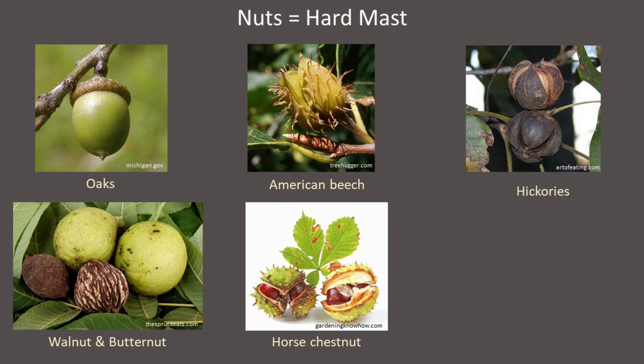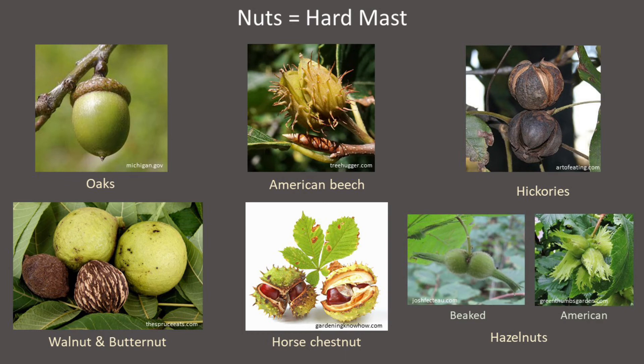These trees have often been planted and are frequently encountered around old homesteads and abandoned farms. Few wildlife actually eat horse chestnuts because they contain high concentrations of secondary chemicals that make them toxic to most wildlife — and horse chestnuts are especially toxic to people. In New England, we also have two shrub species that produce hard mast: beaked hazelnut and American hazelnut.